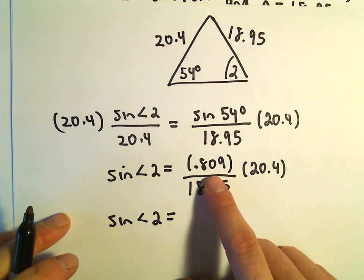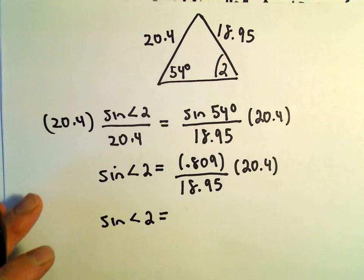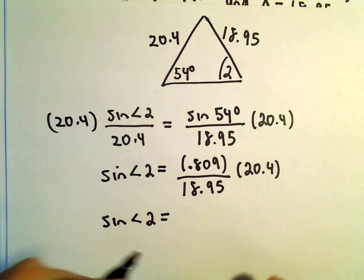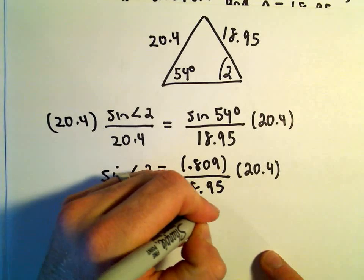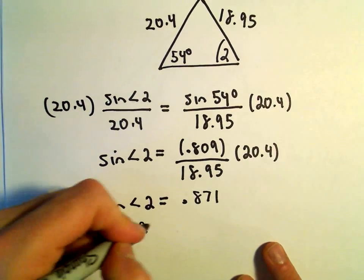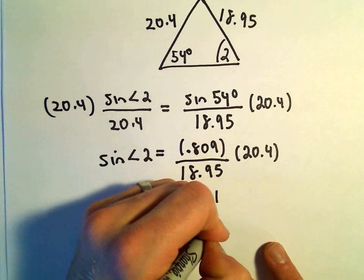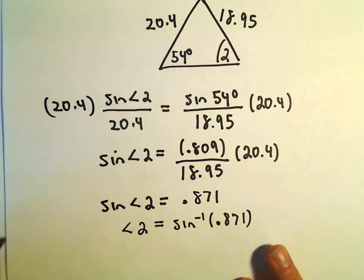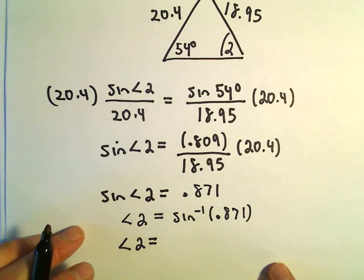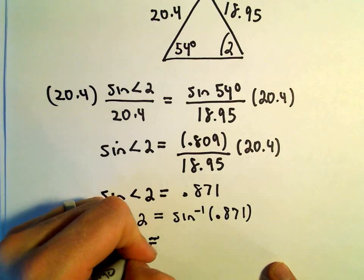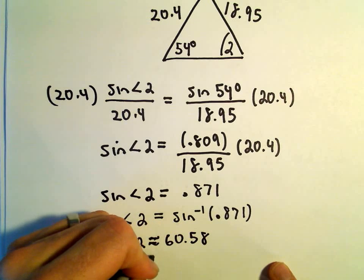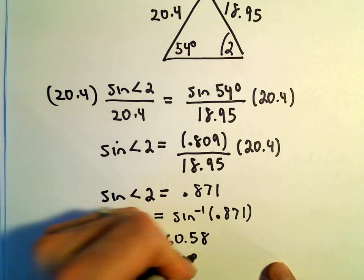So that will give us the sine of angle 2 equals sine of 54 degrees, 0.809, over 18.95 times 20.4. After taking 0.809 and multiplying it by 20.4 and then dividing by 18.95, I'm getting this to be 0.871. And I'm getting that the inverse sine of 0.871 is roughly equal to 60.58.